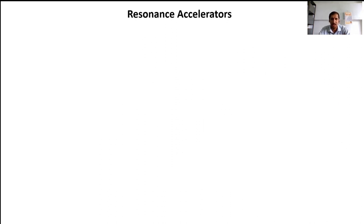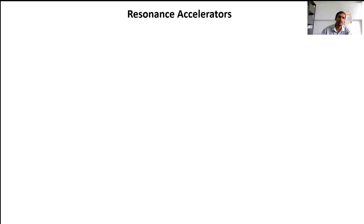Since these machines have an inherent limitation to their energy because of voltage breakdown and discharge, an alternative method which uses the resonance principle is more important for accelerating particles to higher energies. So we have resonance accelerators. One of the basic resonance accelerators is the cyclotron or cyclic accelerator, first built by Ernest Lawrence. It is the simplest of the machines that use the resonance principle.